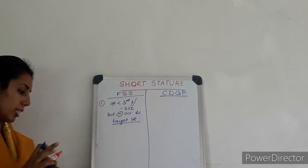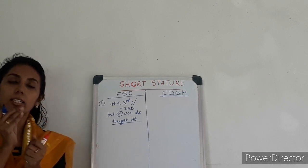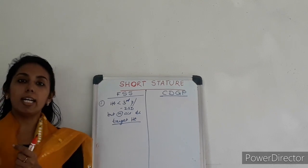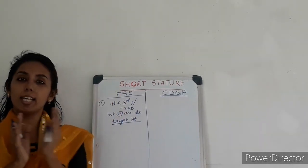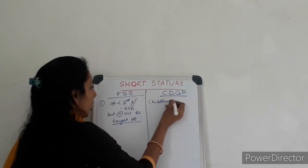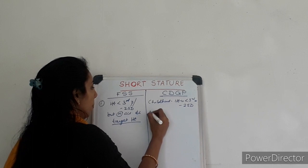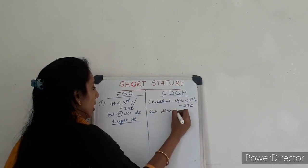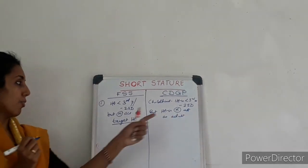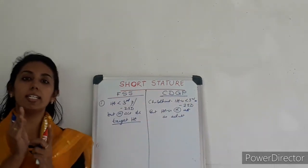Here, what happens in constitutional delay of growth and puberty — again the child is short in childhood. But at the time of puberty, the child's growth rate increases and the target height is again normal. So the childhood height is less than third percentile or less than minus 2 standard deviation, but height is normal as an adult. So the final adult height is normal.